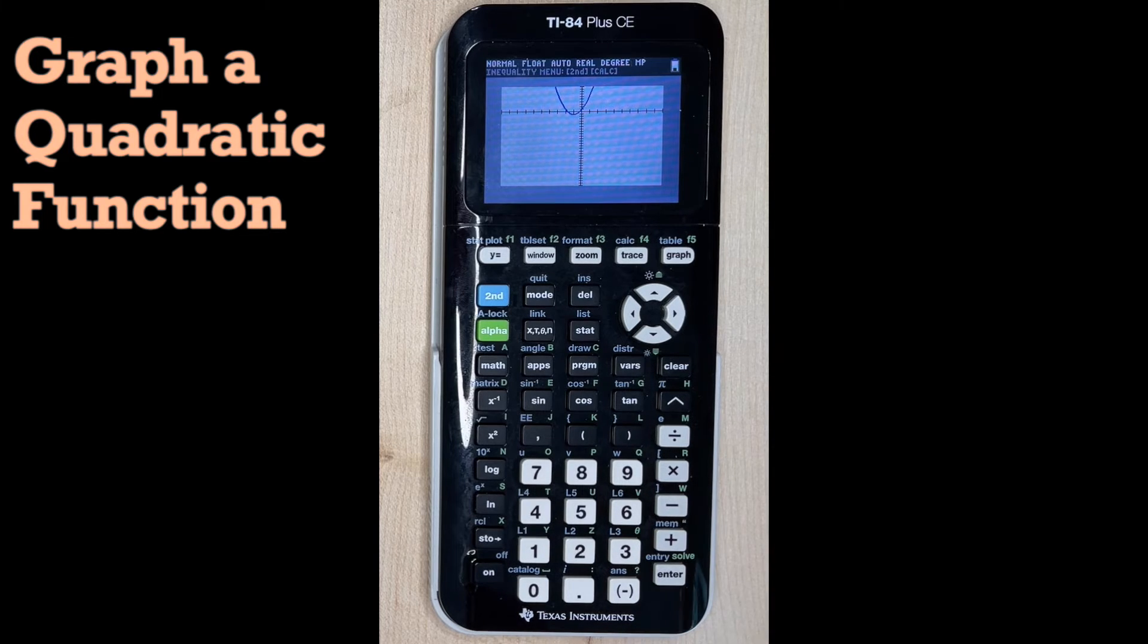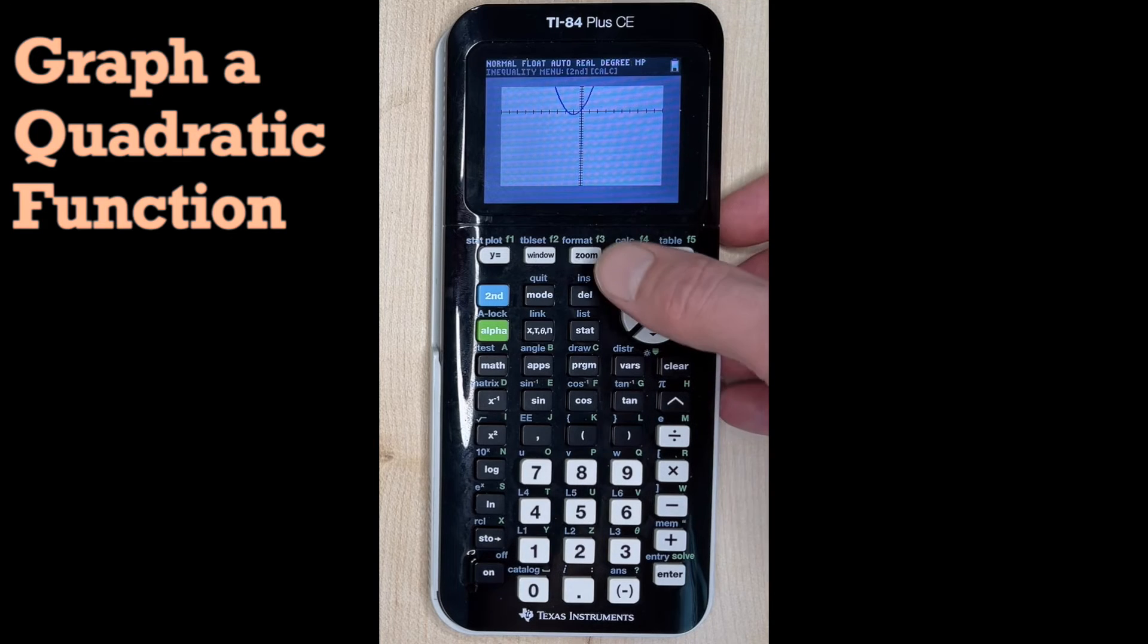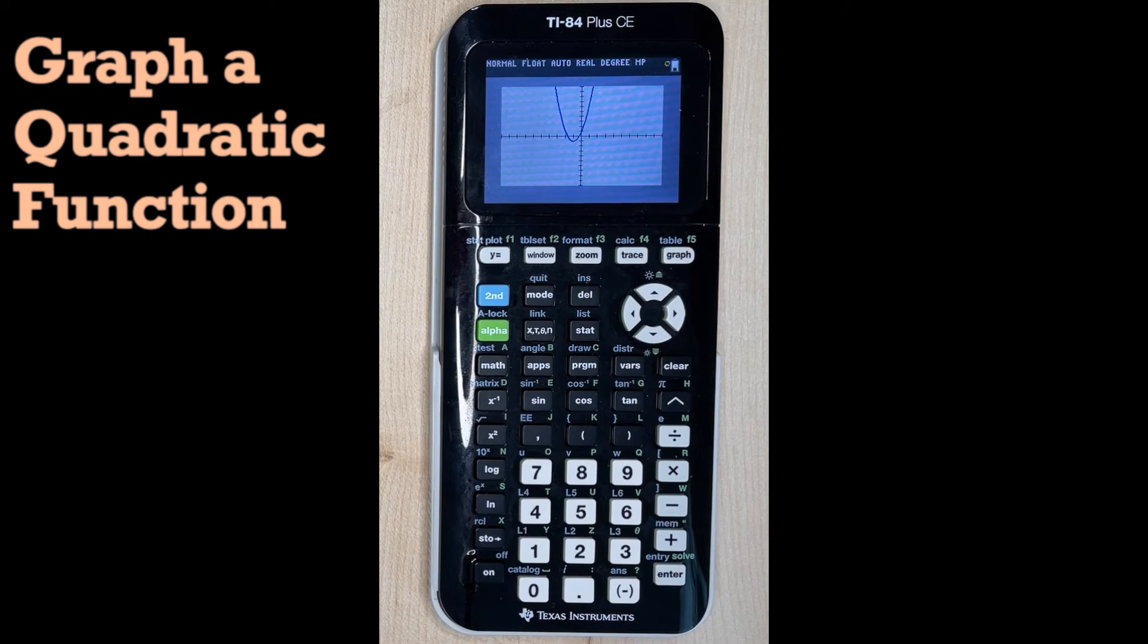One thing we can do to always go back to our standard zoom, which is negative 10 to 10 on the X and Y axis, is we can hit Zoom and then number 6. That looks a lot better.